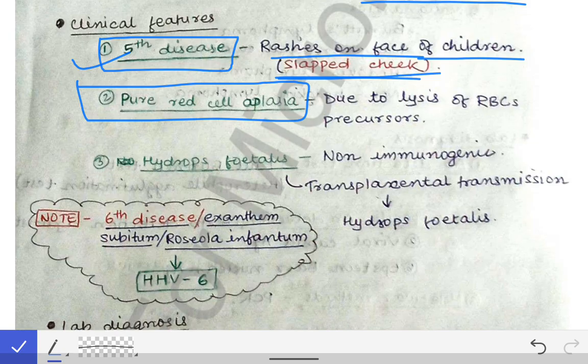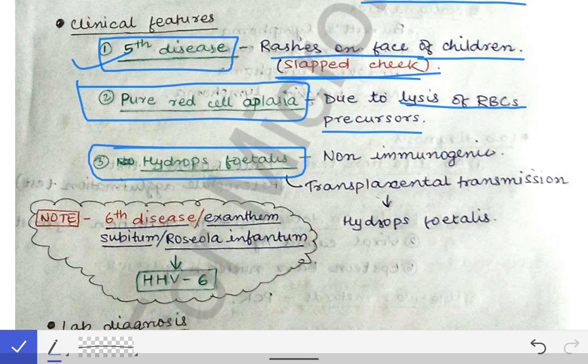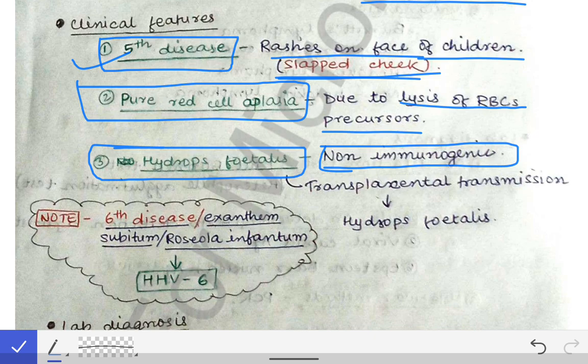Parvovirus B19 also causes pure red cell aplasia, which you will read about in pathology — this is due to lysis of the RBC precursors. It may also cause hydrops fetalis, which is non-immunogenic hydrops fetalis. This is not involving any antibody against the D antigen; it simply causes destruction of RBCs by binding to the P antigens of the precursor RBC cells.